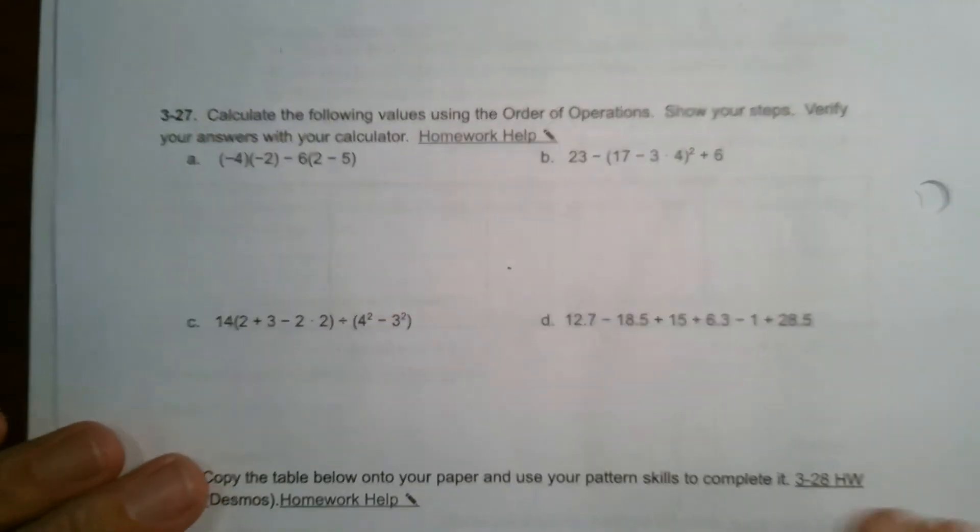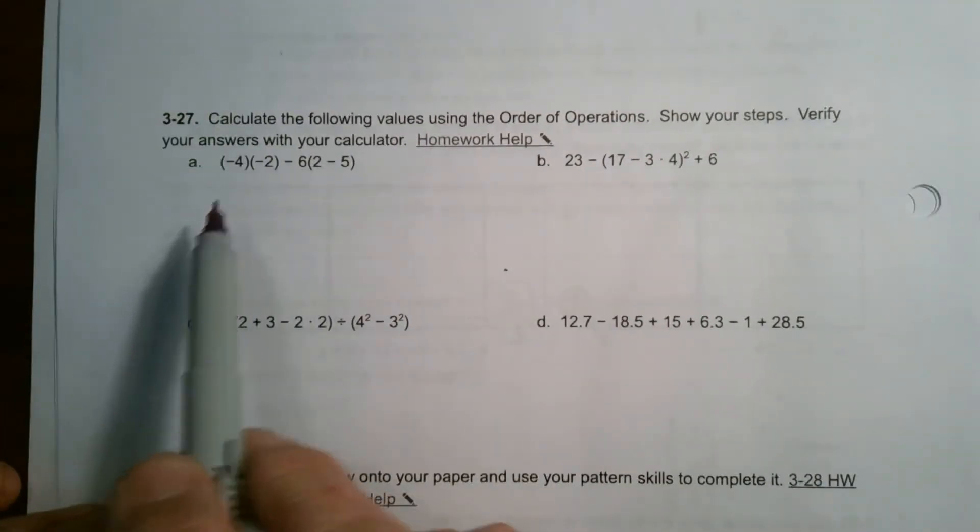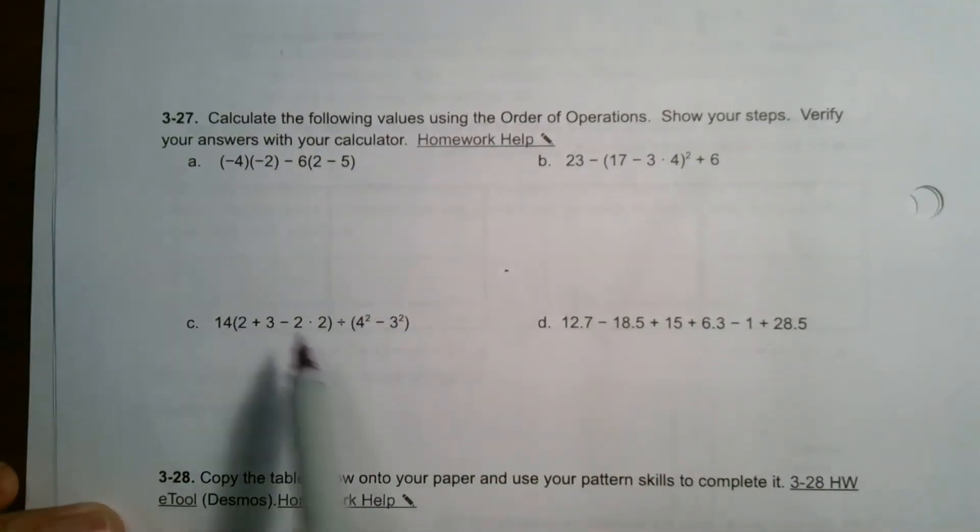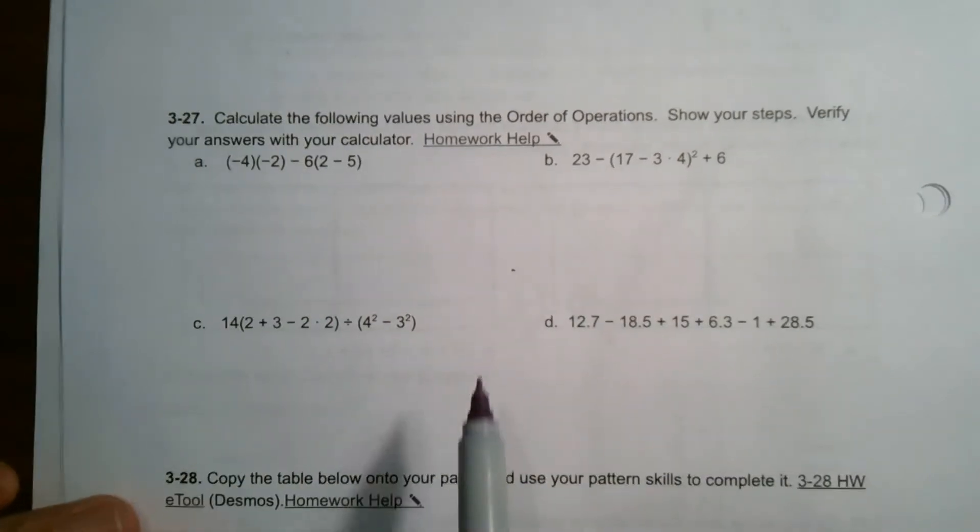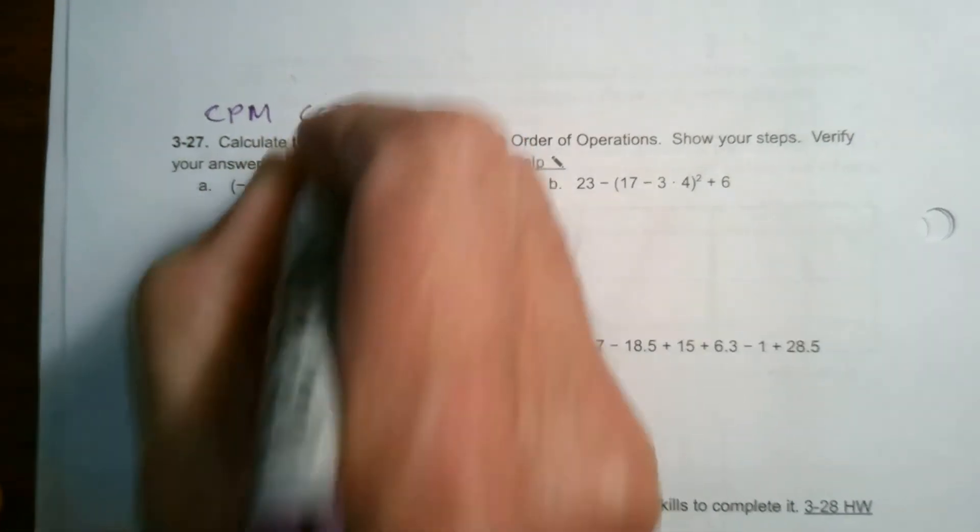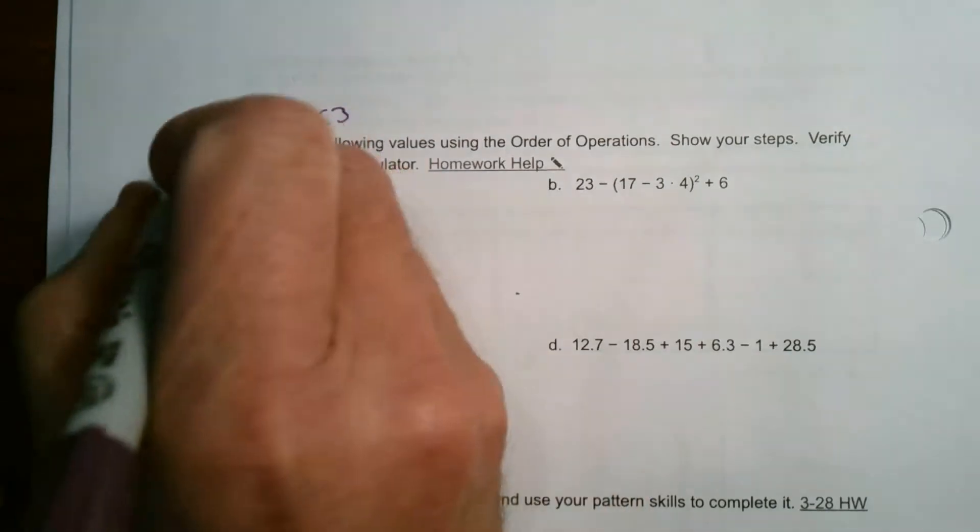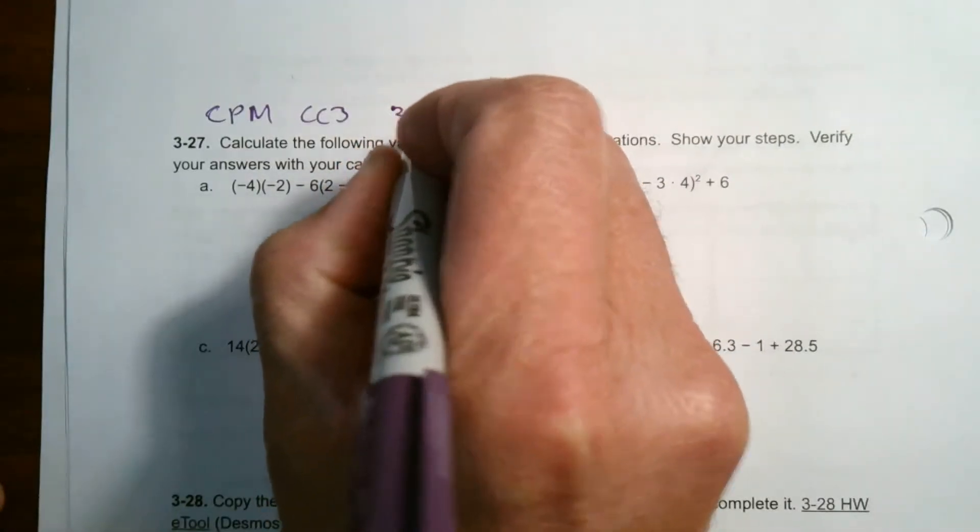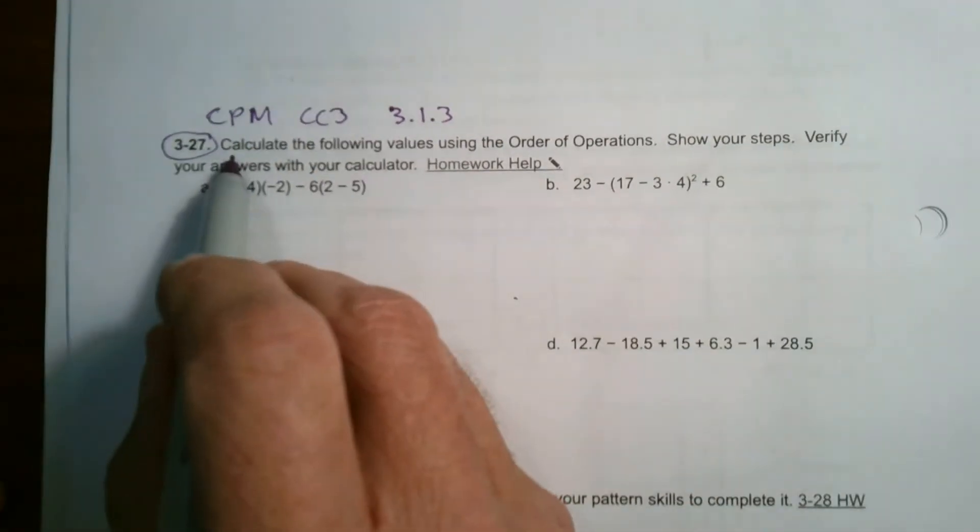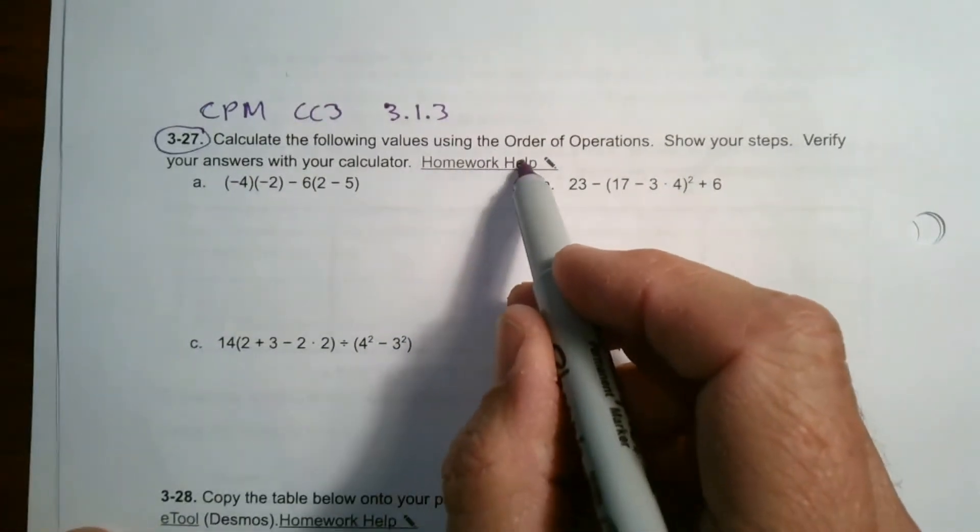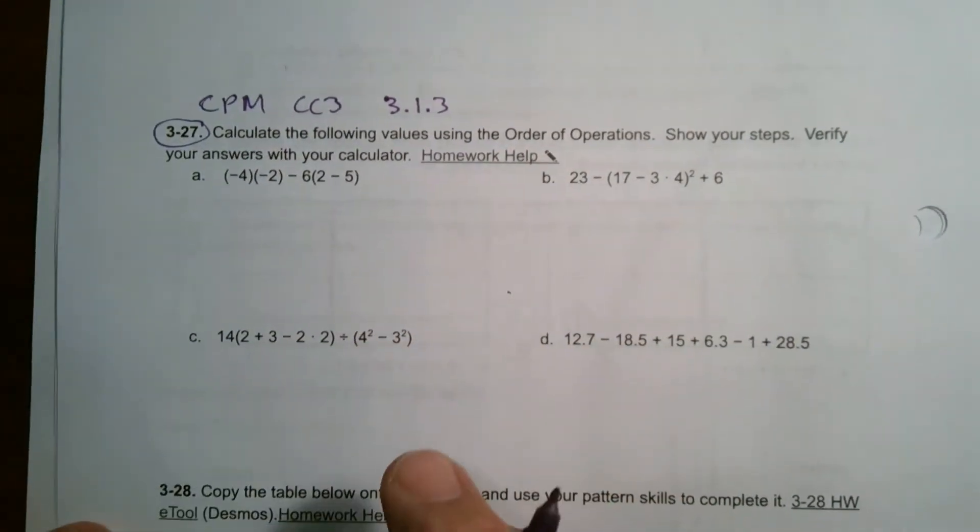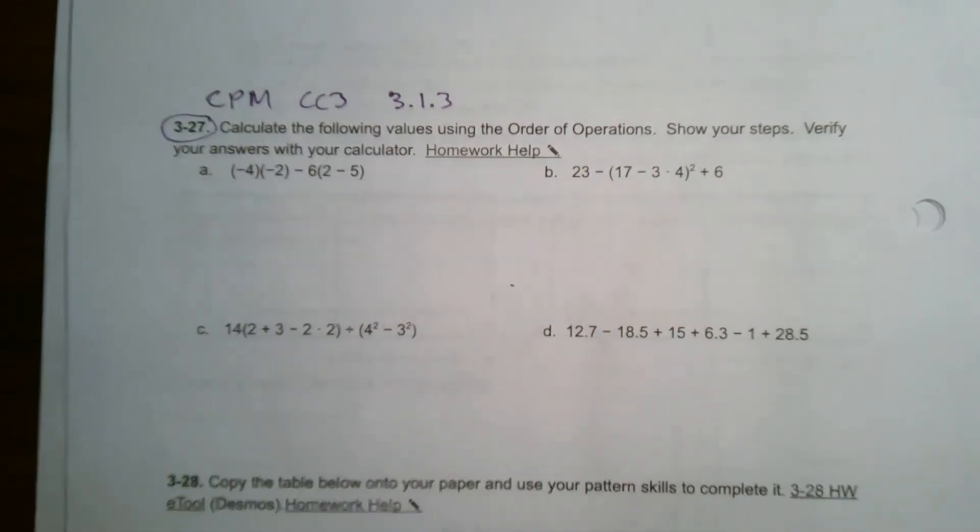Hey folks, Mr. Dell here. We are looking at using order of operations to evaluate or calculate the values of each of these number expressions. This is from CPM Course 3, chapter 3 section 3.1.3, and it's number 3-27. The directions say calculate the following values using order of operations, show your steps, verify your answers with a calculator. I would like you to do this without a calculator, but then you can use a calculator to check your answers if you'd like.